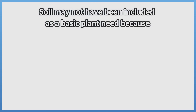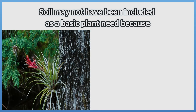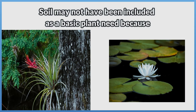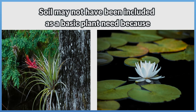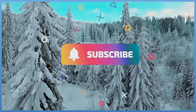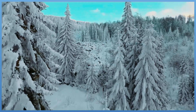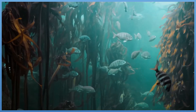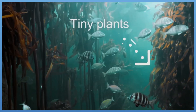Soil may not have been included as a basic plant need because some plants grow on other plants instead of having roots in the soil, and some plants only grow in water. Remember from grade 4: plants can grow in every place that sunlight shines. Even the bottom of sea ice in polar regions has tiny plants growing on it.